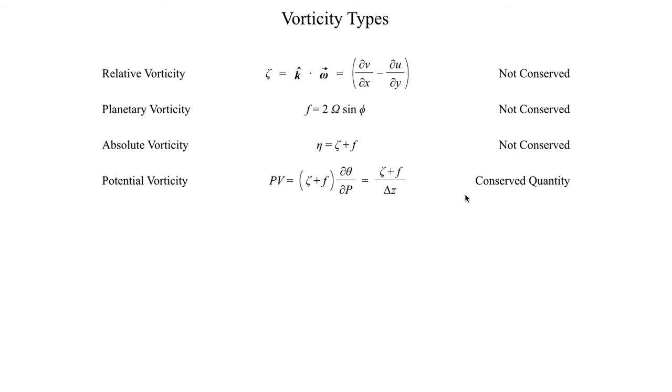I should say this is a conserved quantity for specific situations. So if you've got latent heat release, that's going to cause some issues if you try to use this. But if you don't have any sort of external forcings or any sort of external mechanisms that might influence ζ, f, or Δz, then this is in fact a conserved quantity.